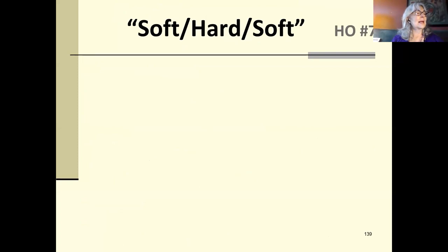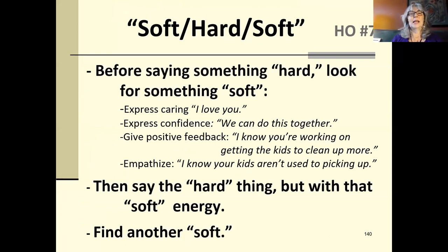And I'm just going to add one more. This is one of my all-time favorites. This is handout number five or seven. Think of something hard you want to say. Just take a moment to do this. But before you say it, look for something soft. So it might be, I love you. It might be, we can do this. I think we can do this together. It might be, I know you're working on getting the kids to clean up more. Or it might be empathy. I know your kids aren't used to picking up. Then say the hard thing. But say it with that soft energy. And if you can use some of the skills we just listed, that will go a lot better. And find another soft. So when Olivia came back to Tina, when Tina was disappointing, Olivia said, I know this is hard for Tommy. I get what you're saying, and, and she said it very softly. My experience is that even my clients who have a really hard time really listening to each other can do this one.